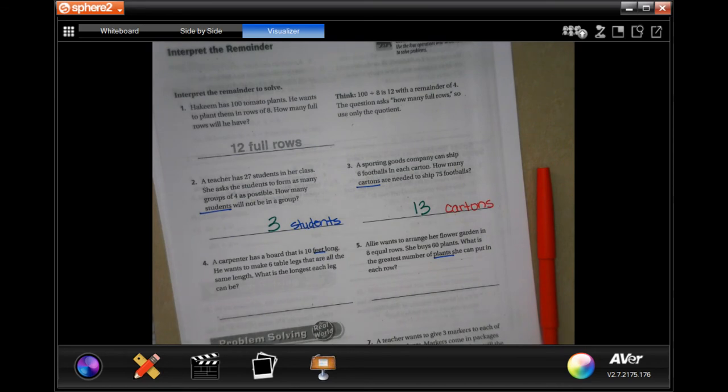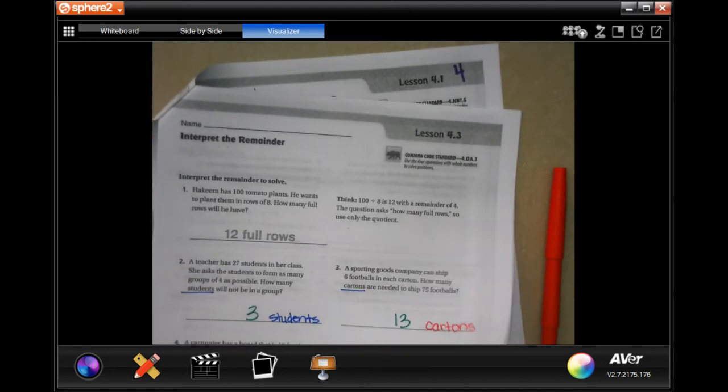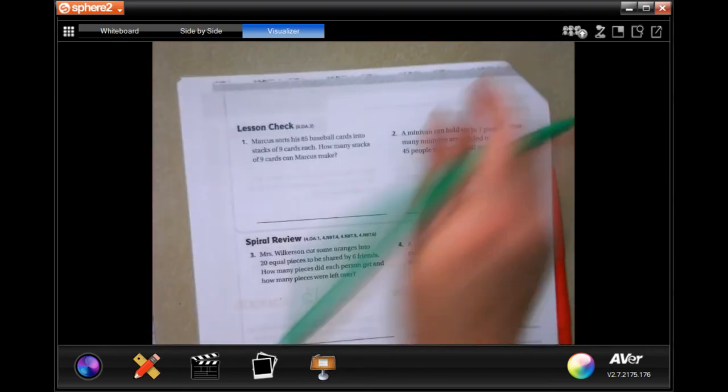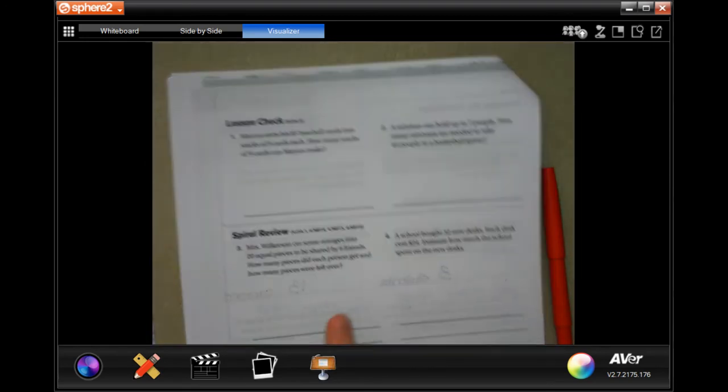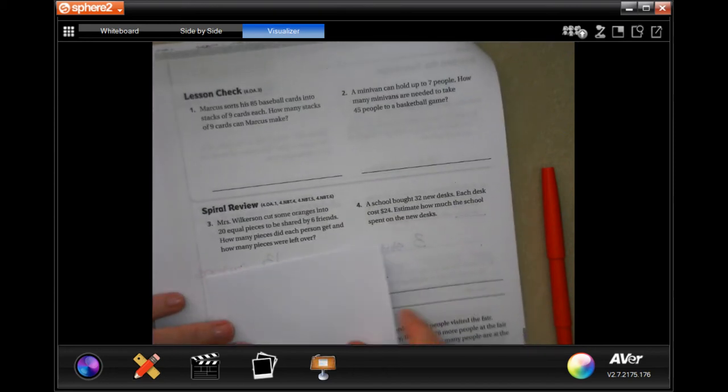You guys are going to do 4 through 7. You totally can. I believe in you. And we are going to turn over and go to the lesson check, which you guys are going to do. We're going to do spiral review. Yes, this lesson flew by. Spiral review.